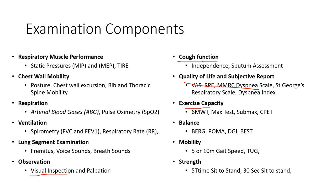Exercise capacity — we've covered that extensively already — is going to be affected in many patients with respiratory conditions. Balance is something we'll cover and explain why it might be impaired in certain patients. Mobility and strength are core components of a PT chest examination. If we're looking at how patients operate within their environment, we still need to assess those foundational components of human performance: strength, mobility, balance.